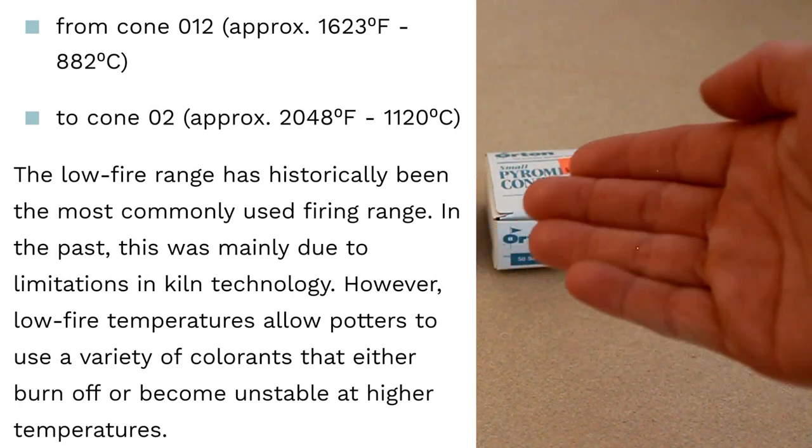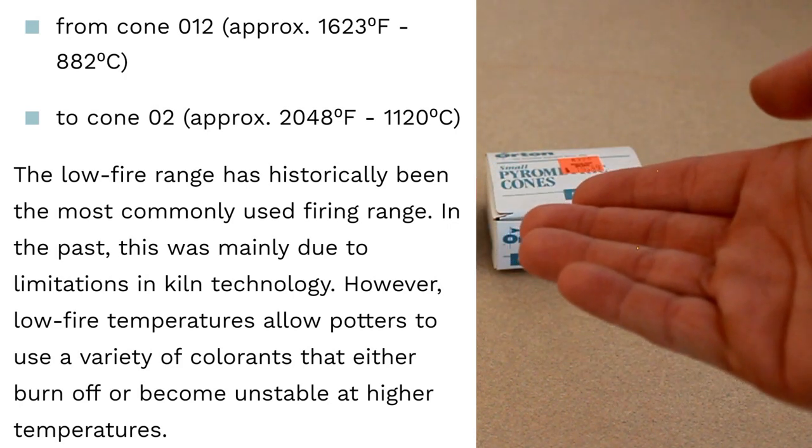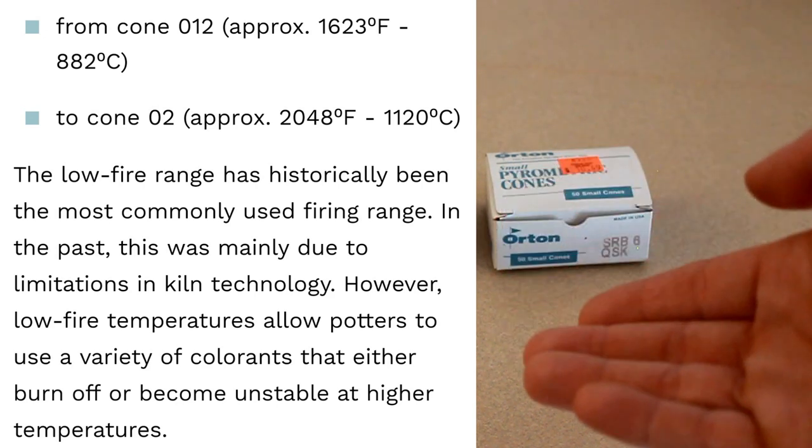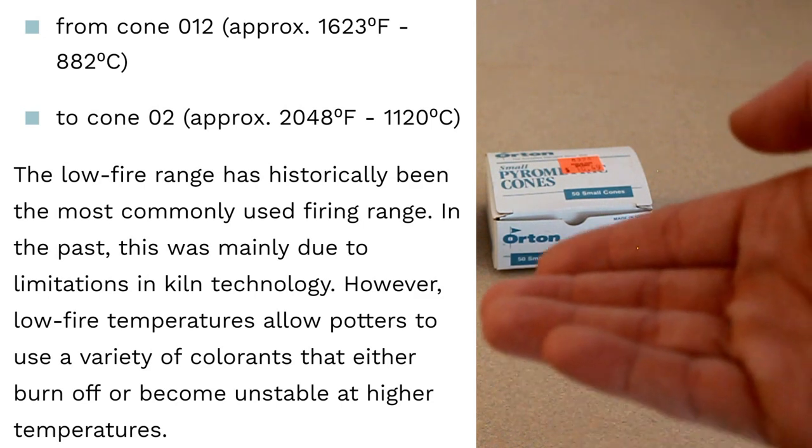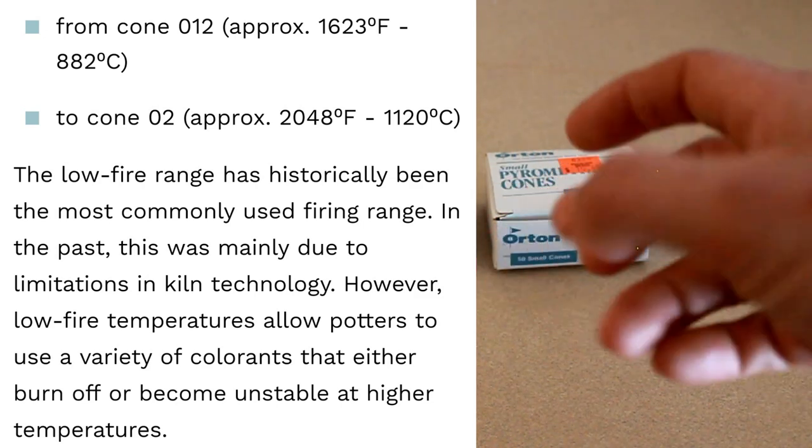And the low fire temperature is where a lot of things are bisque. Usually people put their bisque in between cone 04 and 06. So that could be anywhere between cone 04, 05 and 06. And that is the usual.